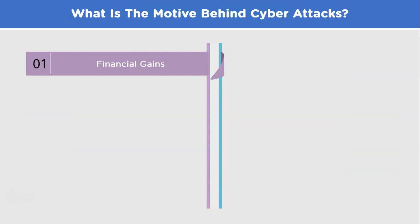First on the list, we have financial gain. One of the most prevalent motivations for cyber attacks is financial gain. Attackers seek to steal sensitive financial information such as credit card details, login credentials, or personal data, which they can sell on the black market or use to commit fraud and identity theft. Ransomware attacks, where attackers encrypt a victim's data and demand payment for decryption keys, are also motivated by financial gain.